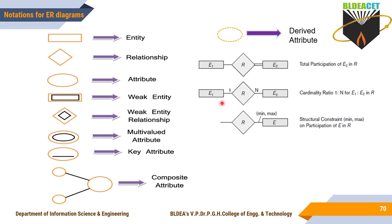One good habit regarding naming conventions: if you take any ER diagram, you read or start from left to right and top to bottom. So from left to right, you specify 1:N. If the ratio is M:N, then one side is M and the other must be N. You can also specify this using structural constraints — a combination of total participation and cardinality ratio — using the min and max notation on each line.